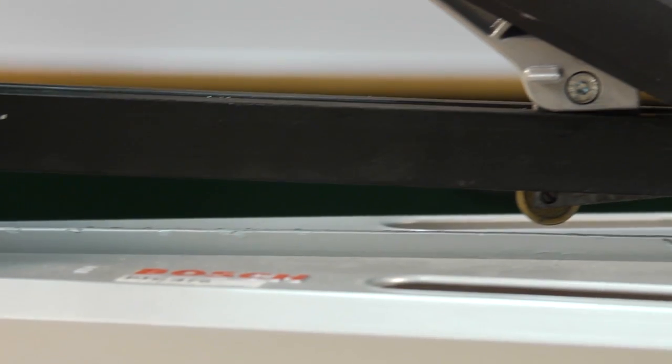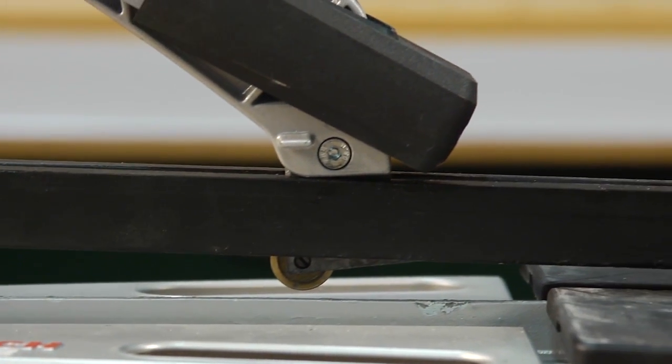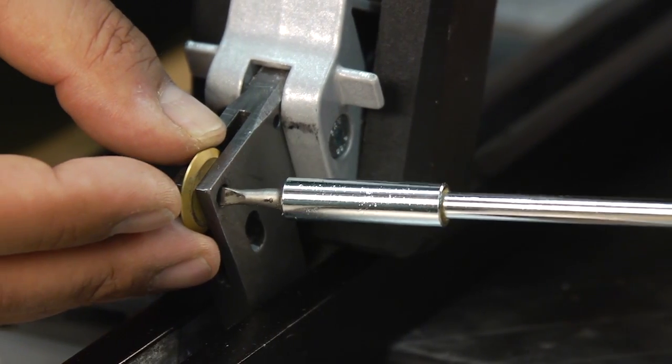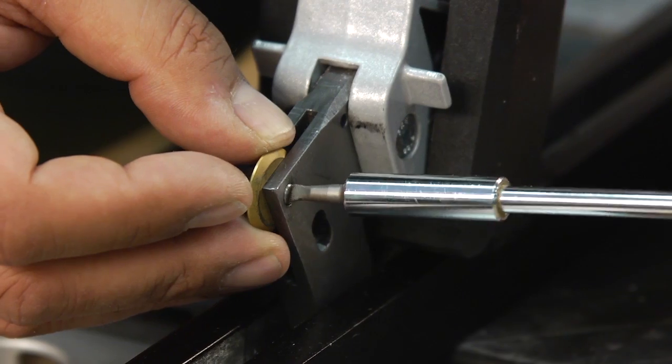The cutting wheel has high precision and a long lifetime due to its titanium coating. If the cutting wheel becomes damaged, it can be quickly replaced in only a few moves.